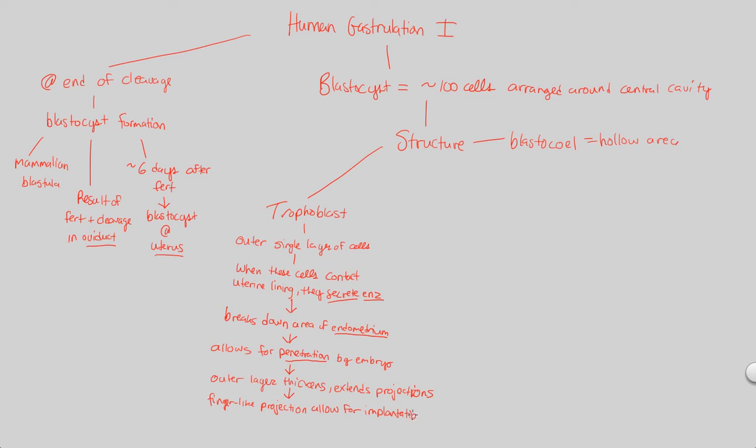These finger-like projections will allow for the implantation of the embryo because they're going to extend themselves and really make sure that the embryo is anchored, so they act as an anchor. It anchors embryo. In addition to anchoring the embryo, it allows for the embryo to be securely fastened to the area it needs to be in, and that is the endometrium.